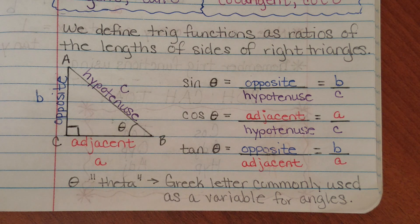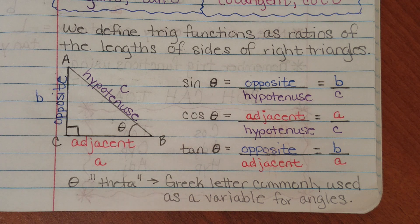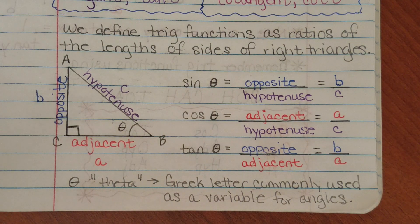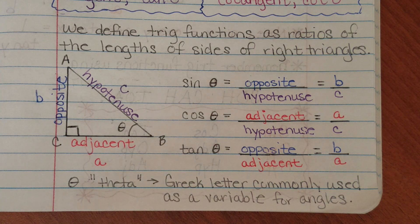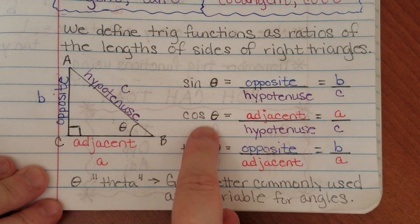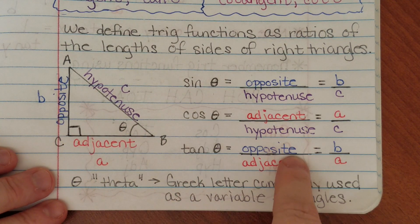At this point in our unit on right triangle trigonometry, your geometry teacher has given you some overview about what we use sine, cosine, and tangent for and how we define them. Simply put, the sine, cosine, and tangent are functions that we use to help us find missing sides of triangles when we have a right triangle and at least one angle besides the 90-degree angle and one side of the triangle are given. So if we have that information, we can figure out every other part of the triangle using our trig functions. The sine, cosine, and tangent are defined as I have them written here.